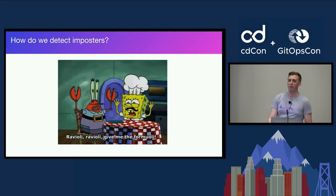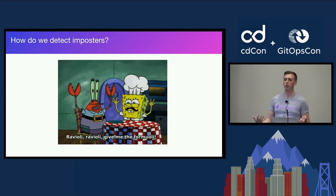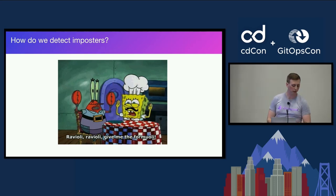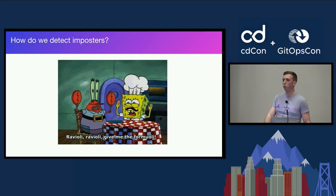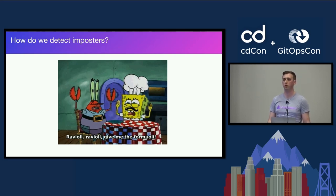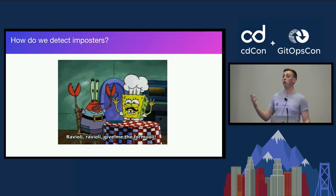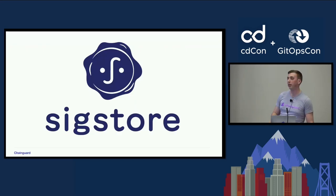That raises the question: how do we deal with imposters? One thing that makes sense is to look at what other people are doing. There's been a large focus on software supply chain for artifacts in general — deploying to prod, container images, packages. That's where we really start talking about SigStore, an open source project under the OpenSSF whose goal is to make signing software and artifacts as easy as possible and lower the barrier of entry.